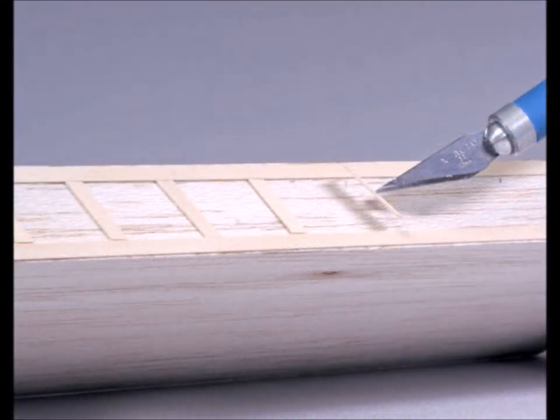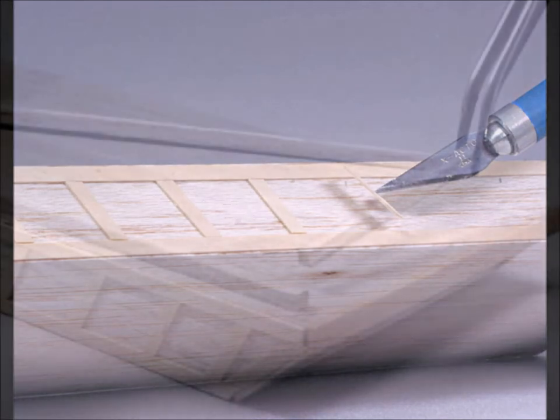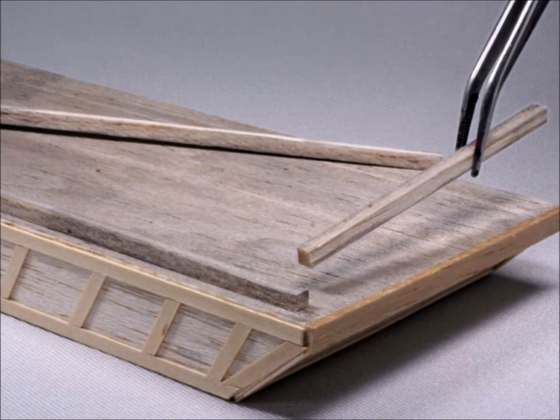From there, all these barges, almost all of them I should say, have rub rails on the side to keep from banging up the actual material that the barge is made with. Also have to have some end bits and some side bits for covering up all the excess holes and stuff like that.